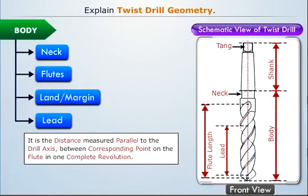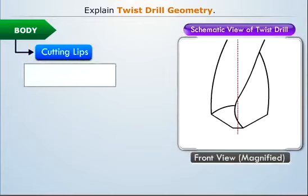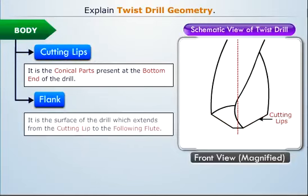Now let us take a closer look at the tip of the body. We see that at the bottom end, there are two conical parts known as cutting lips. The surface of the drill which extends from the cutting lips to the respective flute is called the flank.